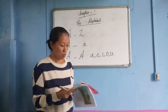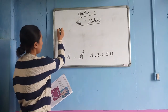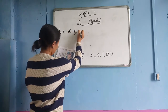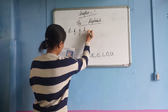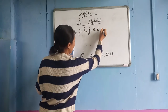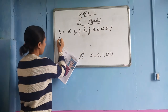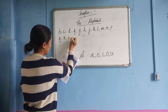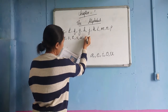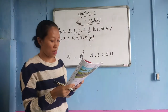The remaining 21 letters are called consonants. The consonants are B, C, D, F, G, H, J, K, L, M, N, P, Q, R, S, T, V, W, X, Y, Z.